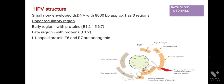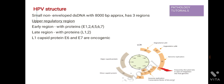First we will study the HPV structure. Human papillomavirus is a small non-enveloped double-stranded DNA molecule with approximately 8000 base pairs. It has three regions: first is the upper regulatory region, which is non-coding and functions as a transcription and replication control region. Then comes the early region, which encodes proteins called early proteins, E1 to E7 (excluding E3), so these are six in number.